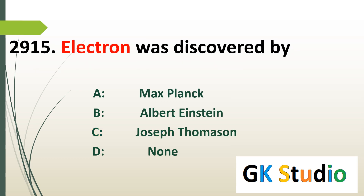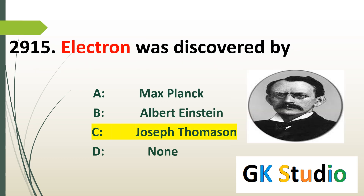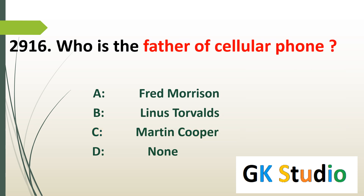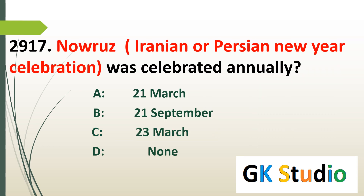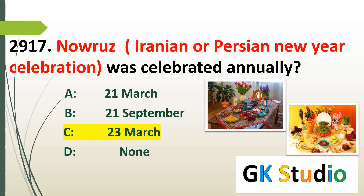Electron was discovered by J.J. Thomson. Electron ko Joseph Thompson ne discover kiya. Who is the father of cellular form? Nowruz is the Iranian or Persian New Year celebration, celebrated annually on 23rd March.